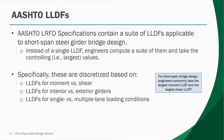AASHTO LRFD specifications contain a large suite of live load distribution factors applicable to short-span steel girder bridge design. It can seem daunting at first because when you open the specification, there's a large library of distribution factors applicable for a wide variety of cross sections. Instead of a single live load distribution factor, engineers compute a suite of them and take the controlling values. For short-span steel bridge design, engineers commonly take the largest moment live load distribution factor and the largest shear live load distribution factor. In the specification, they're discretized more specifically: there are factors for moment and for shear, for interior girders and for exterior girders, and for single lane versus multiple lane loading conditions. Ultimately, it's a routine step-by-step process — the equations are very plug-and-chug and methodical.